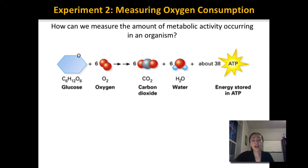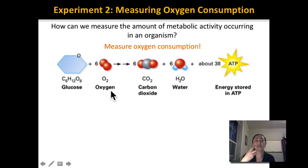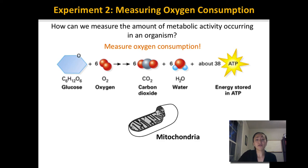Where does this whole process happen? It all happens in structures called mitochondria. Mitochondria is where this whole conversion takes place. If we want to measure how much metabolic activity is happening in a cell or how much energy they're using, one way to measure this is by measuring the amount of oxygen being consumed, because oxygen is essential in this process. When we breathe in oxygen, that oxygen eventually travels to our mitochondria inside each of our cells, where glucose is converted into energy.